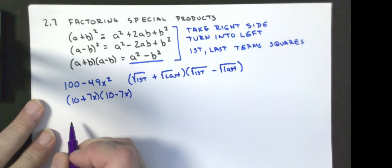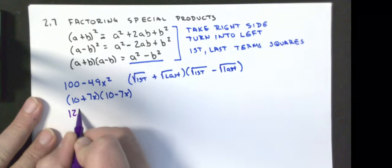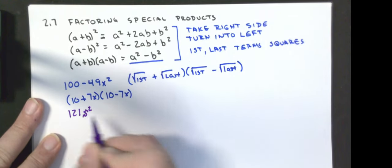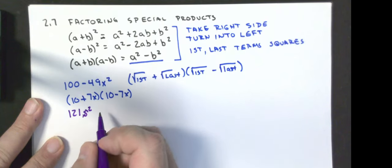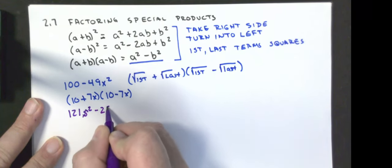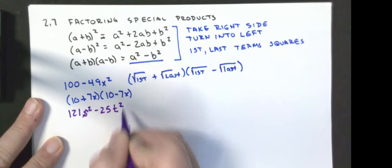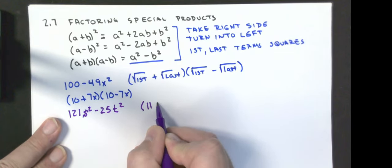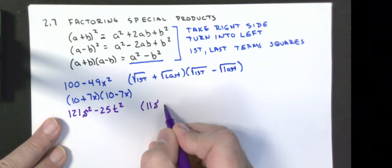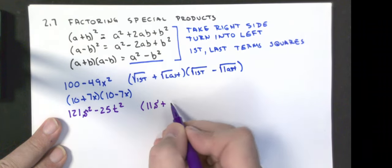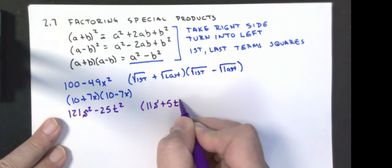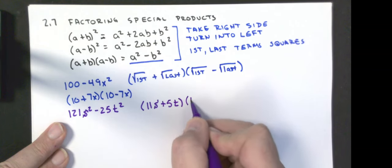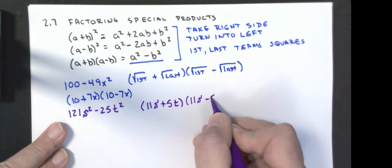Next example: 121s² minus 25t². The square root of the first is 11s, plus the square root of the last which is 5t, then copy this but just change the sign: 11s minus 5t. So the answer is (11s + 5t)(11s minus 5t).